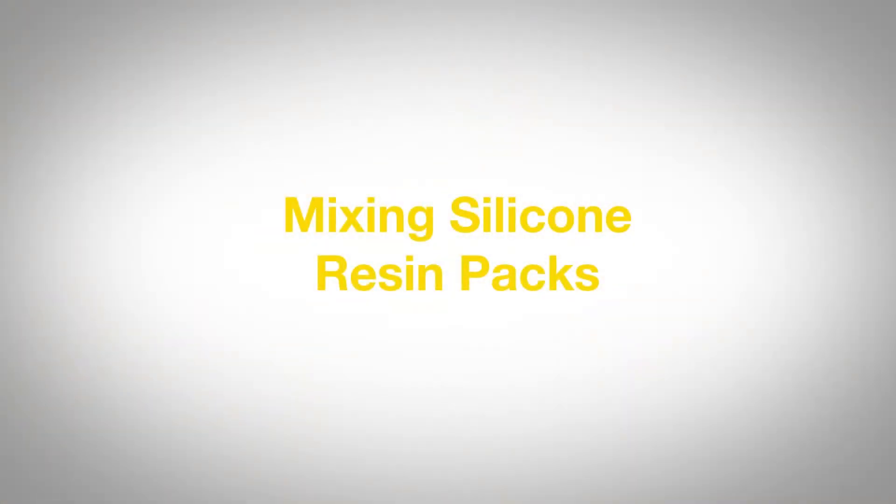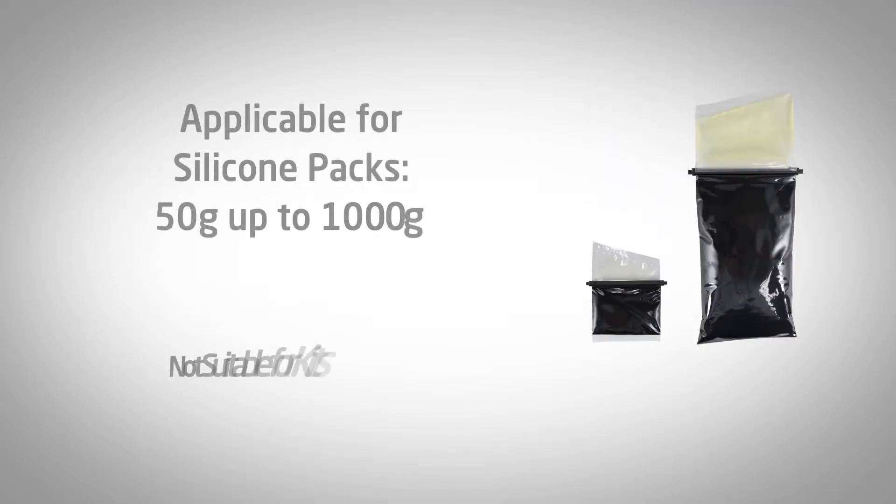Electrolube resin packs come in pre-measured packs ready to use. In this example video we are using a 250 gram resin pack which has a mix ratio of 1 to 1, but the process is essentially the same for all pack sizes.